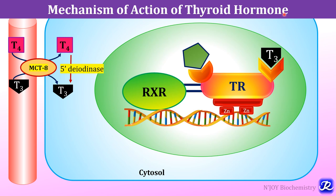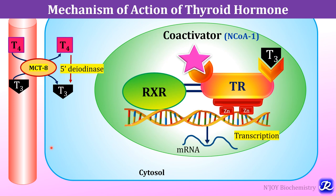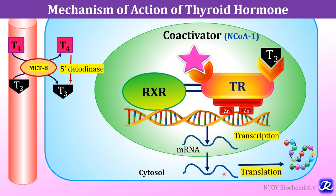When T3 binds with the ligand binding domain present on the thyroid receptor, the co-repressor is released from the trans activation domain and instead a co-activator — N-coactivator 1 — is bound. In this way transcription is activated, messenger RNA is transcribed and transported from the nucleus into the cytosol, and further through the process of translation, protein is synthesized. This is the mechanism of action of thyroid hormone.